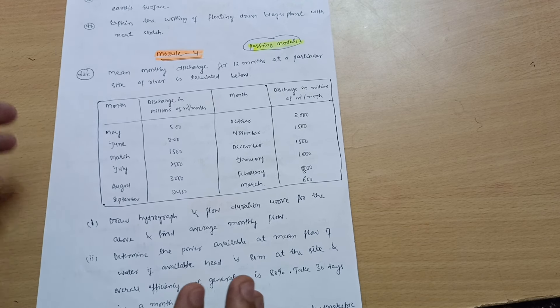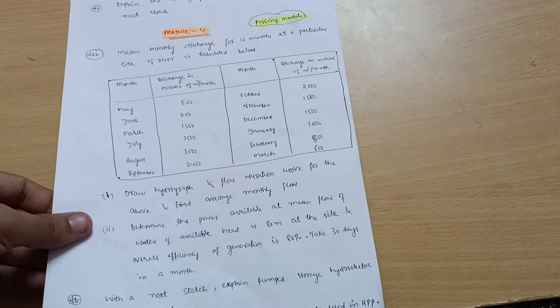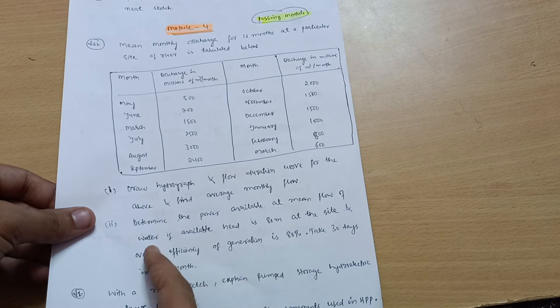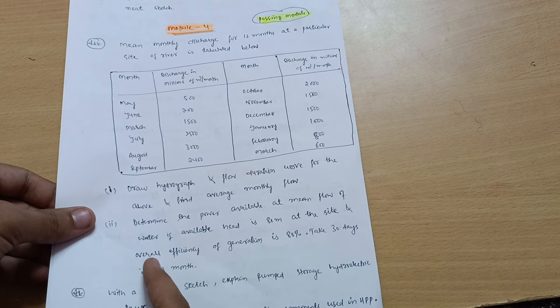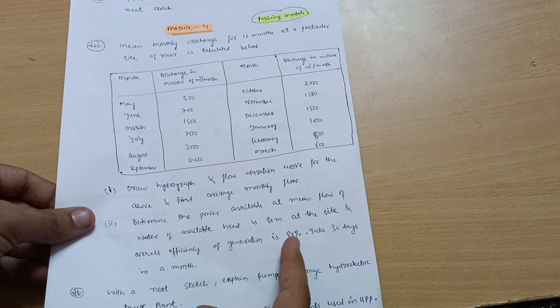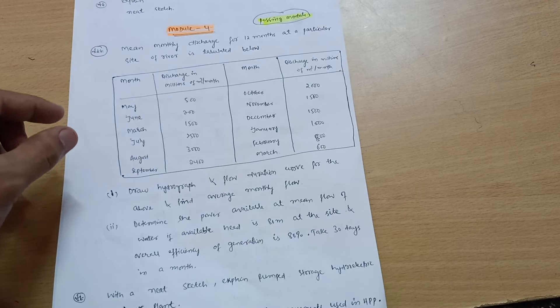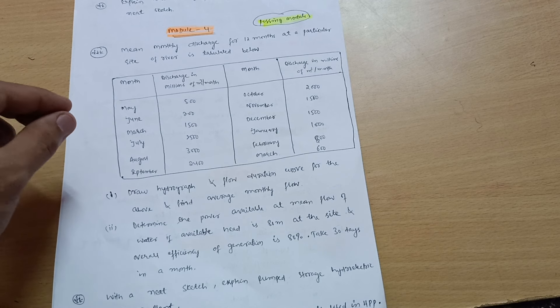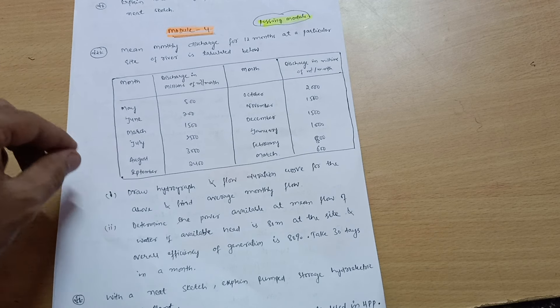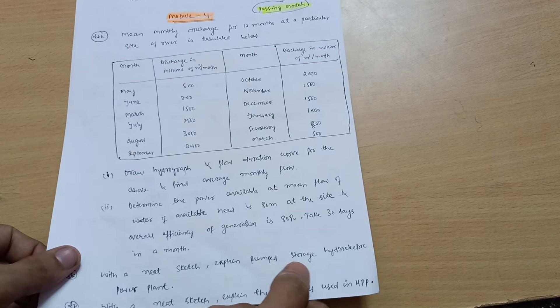It carries 10 marks, very simple problem. You need to draw the hydrograph and flow duration curve, which is easy to draw on the graph sheet. Next is determine the power available at mean flow of water if available head is 80 meter at the site and overall efficiency of generation is 80 percent. Take 30 days in a month. This is the problem, so on the same basis there will be some data different but you should focus on and try this problem first. Rest of the problems you can easily do, only the data will be different.